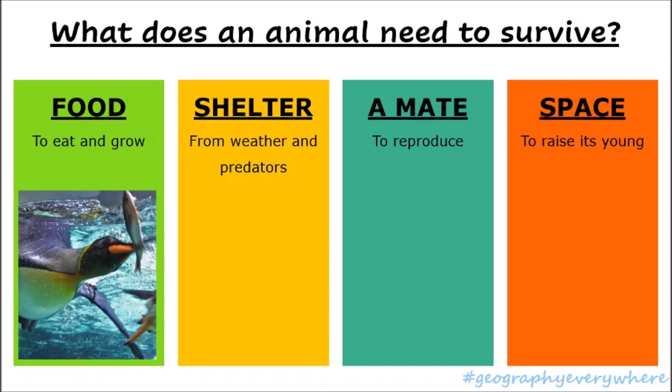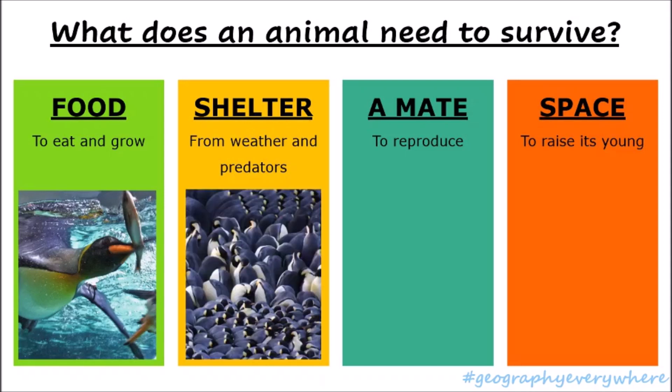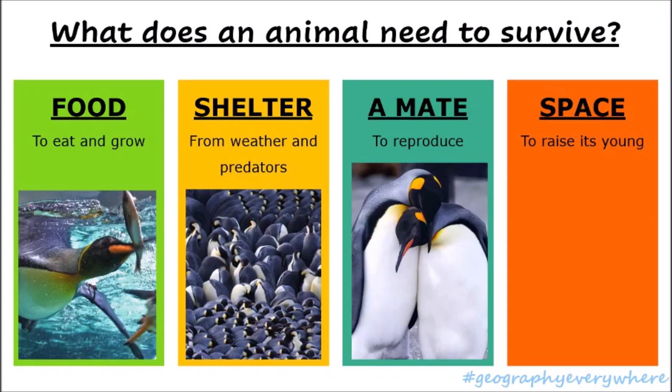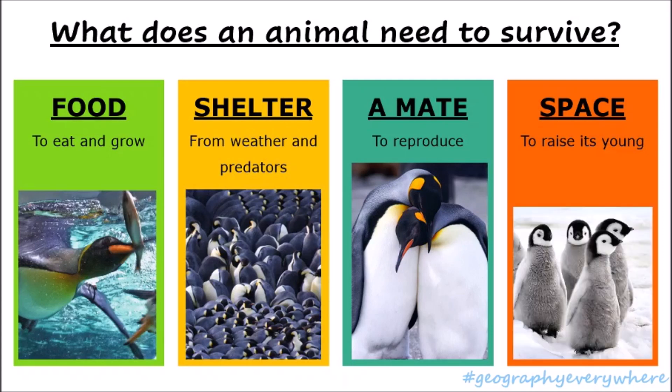Let's look at these from the point of view of the emperor penguin. The penguin needs food to eat and grow — in this case, it's fish. It needs shelter from weather and predators. It also needs a mate to reproduce and have young, and there are also the young penguins.